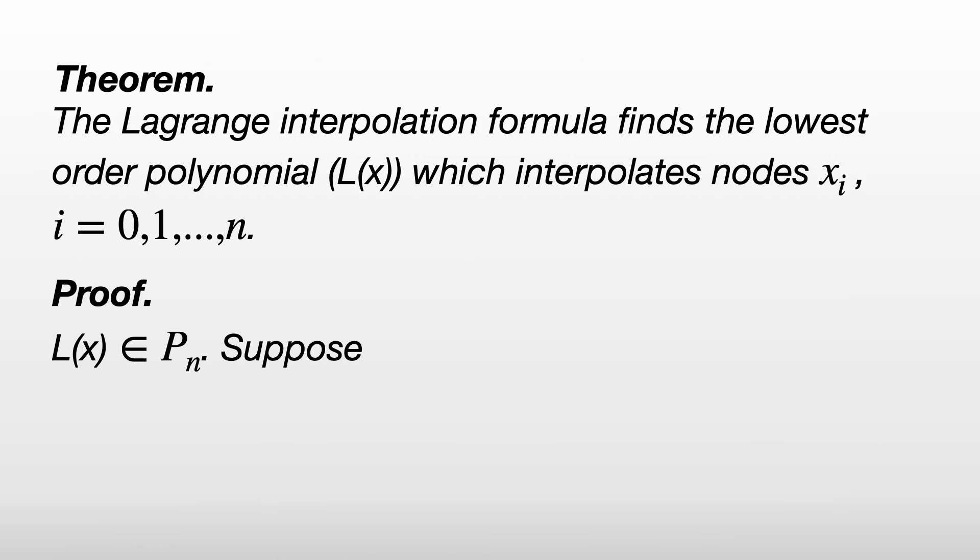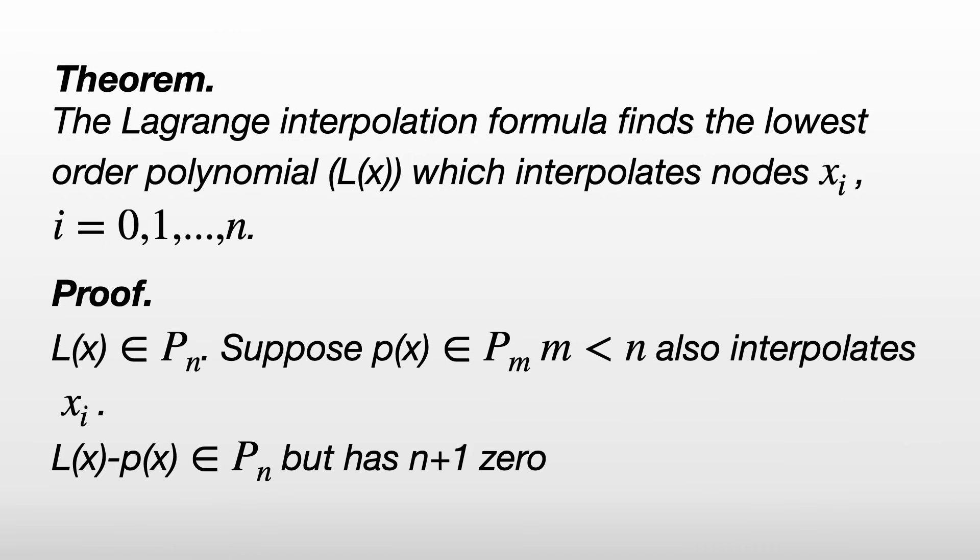Assume there's some p(x) which is a lower order polynomial that interpolates the same nodes. L - p is in P_n, but it has n+1 zeros as we've seen. And the only way this is possible is if L was equal to p in the first place.